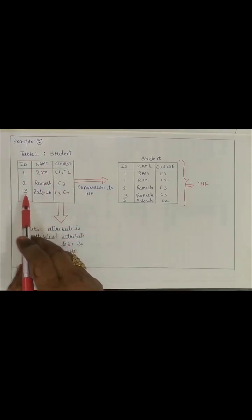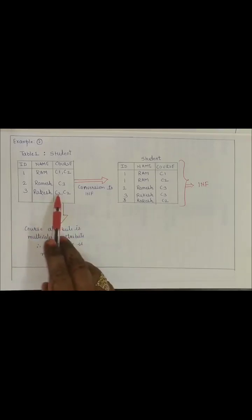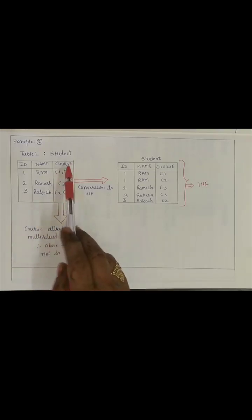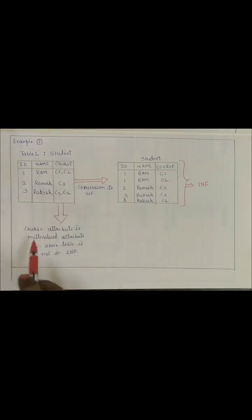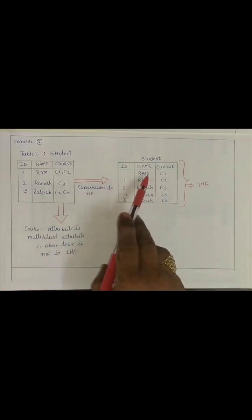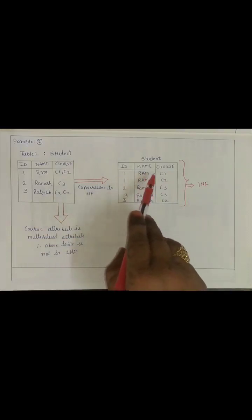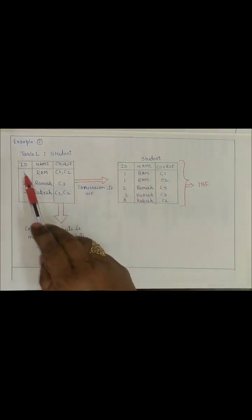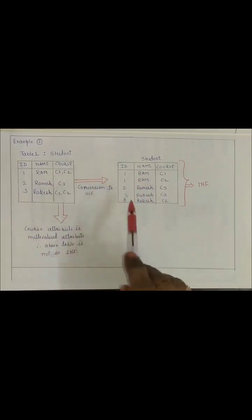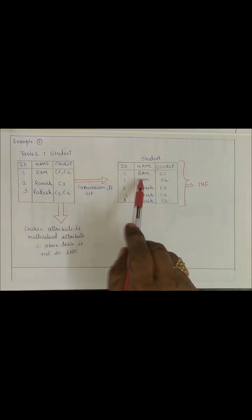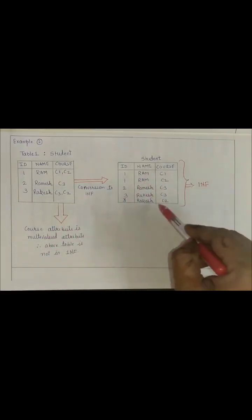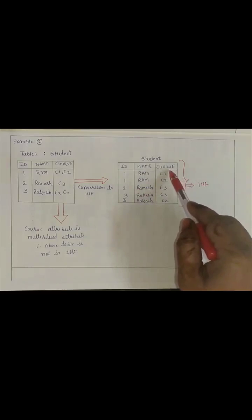Again, the third tuple is having C3 and C2 — two values for the attribute course. That's why we say course attribute is a multi-valued attribute, and therefore this above table is not in 1NF. For conversion to 1NF, what we have done is split the values of the course attribute. Here you can see: same ID 1 with name RAM is written twice — 1, RAM, C1 and 1, RAM, C2. Now the course attribute is a single-valued attribute.